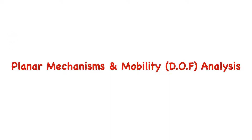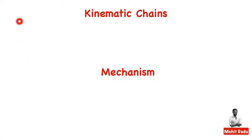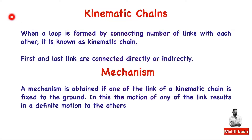Welcome to another lecture on mechanics of machinery. So far we have studied about kinematic links and their connection to form kinematic pairs. In this video we'll be studying about kinematic chains, mechanisms, and how to calculate the degree of freedom or mobility analysis of these mechanisms. A kinematic chain means connecting different links to form a loop such that the first and last links are connected directly or indirectly. A kinematic chain becomes a mechanism when one of its links is fixed to the ground, so there should be at least one fixed link, which results in definite motion of the other links.